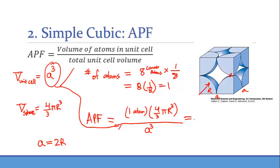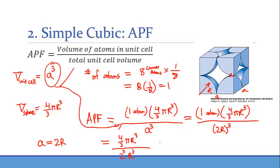So here we have one atom, 4 thirds pi r cubed, and then the lattice parameter cubed, which is essentially 2r cubed. Now, if we simplify, the rest is just algebra, so we'll have 4 thirds pi r cubed over 2 to the third r cubed, and here what you'll see is that the r cubes cancel.